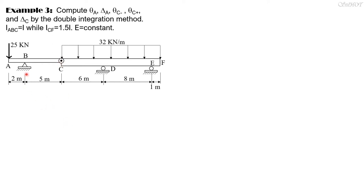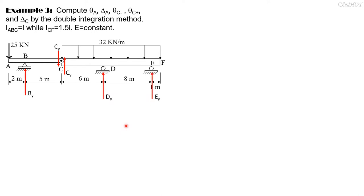First of all we have to compute the reactions. Let the reaction at B be denoted by By. Because this is an interior pin, assume it is downward here then upward by the action-reaction concept, so Cy is upward and By is also upward. Considering portion ABC.